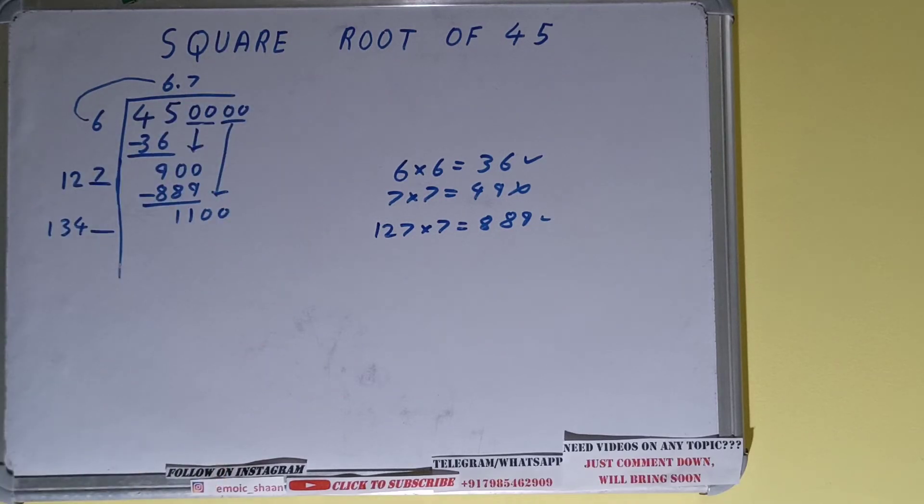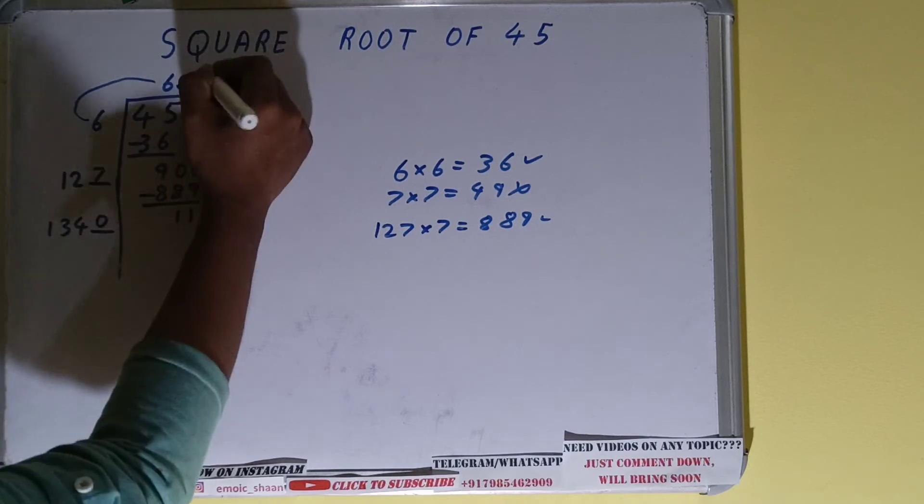Okay, now you can clearly see if I take 1 here also, then also the number which will get will be greater than 1100. So we cannot take 1, so we have to take 0 here and 0 here.